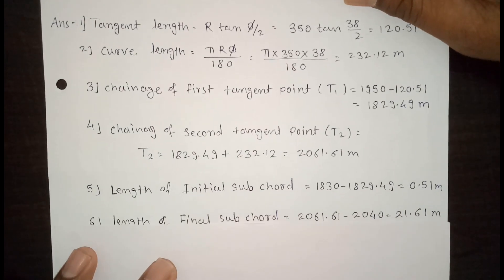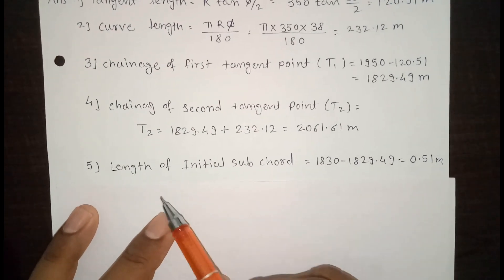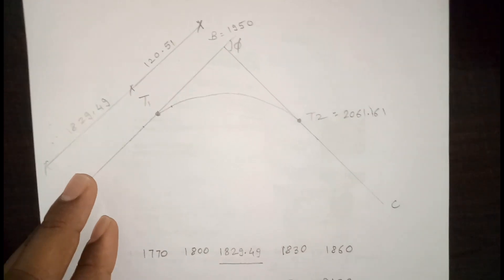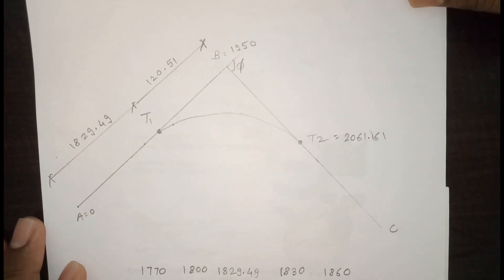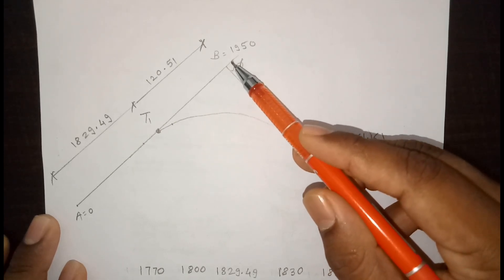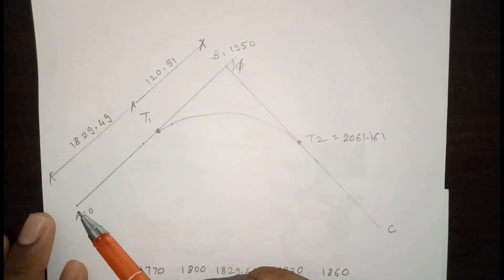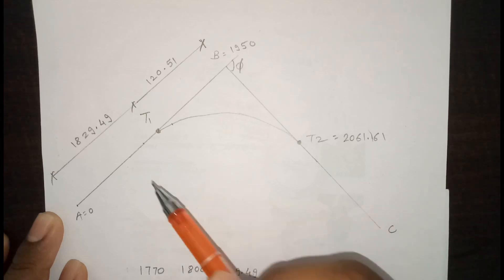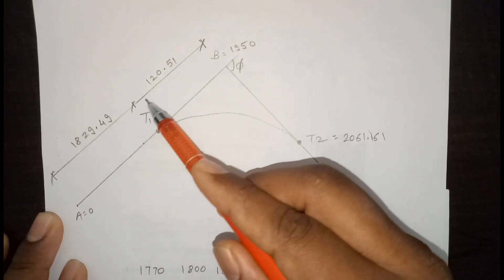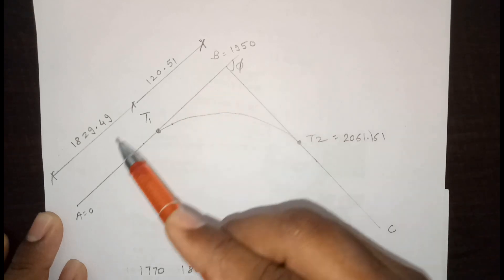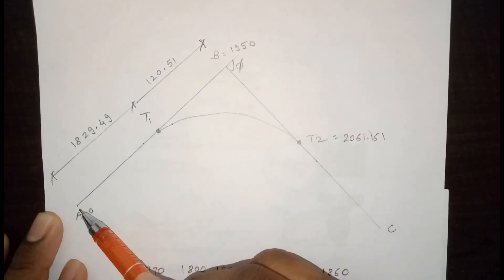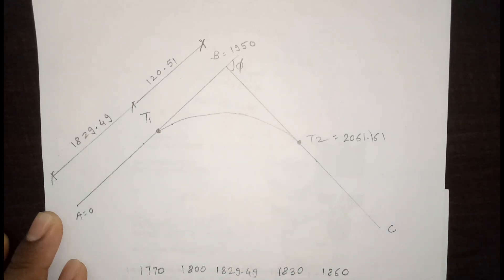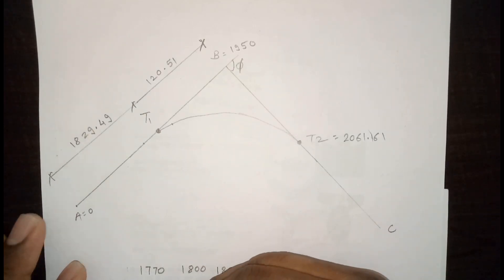Now we calculate the length of the initial sub-chord. Looking at the diagram: the curve starts at T1 and ends at T2, with the intersection point B having chainage 1950. The chainage of T1 is 1829.49. The peg interval is 30 meters, so chainages go 0, 30, 60, 90 ... 1800, and the next chainage after T1 is 1830.